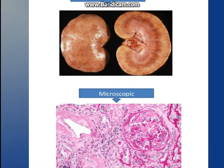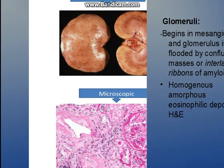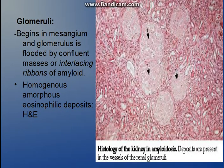This is a gross picture showing the kidneys — they are enlarged in size and have a waxy hue. On microscopy we can see a glomerulus which is pinkish in color, meaning amyloid has been deposited there. In the glomeruli, it begins in the mesangium, and there are interlacing ribbons of amyloid. On H&E section it will be amorphous and eosinophilic; on Congo red staining it will be pinkish red.